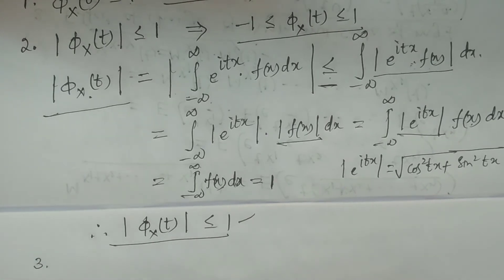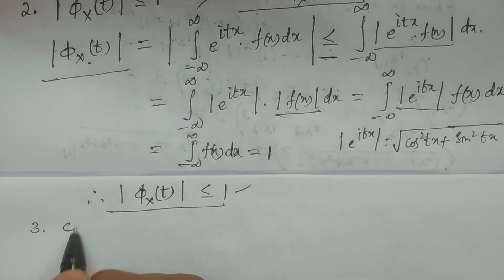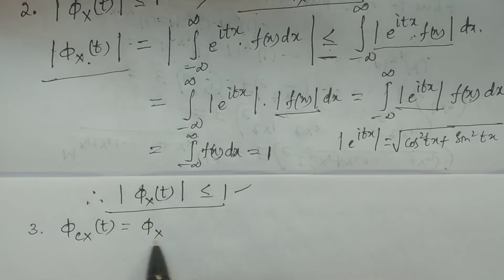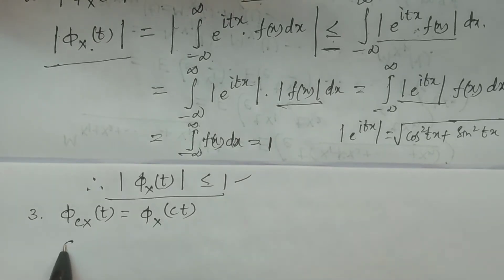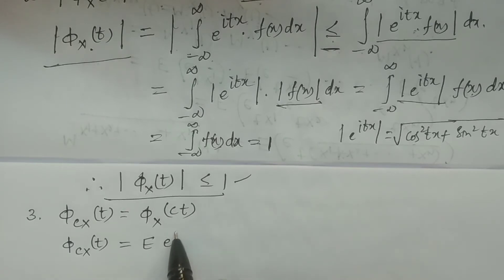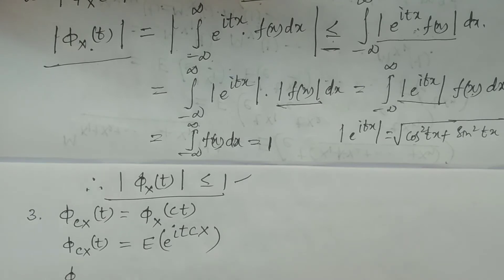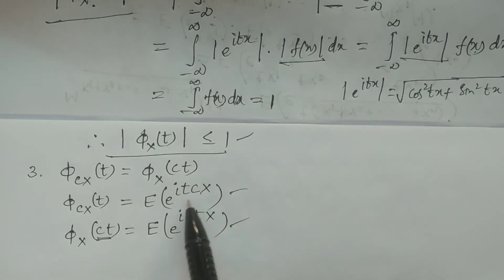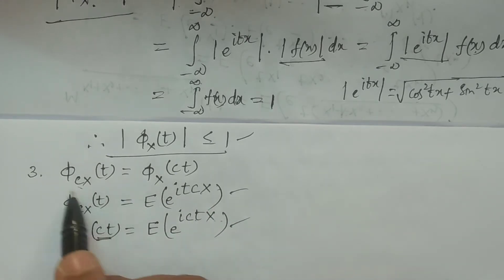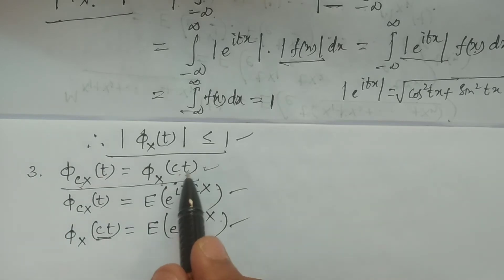Property number 3: phi_{cx}(t) = phi_x(ct). This can be easily proved — we proved a similar property for moment generating functions. For the left-hand side, phi_{cx}(t) = expectation of e^{it(cx)}. For the right-hand side, phi_x(ct) = expectation of e^{i(ct)x}. Both expressions are identical — expectation of e^{itcx} — so the two are equal. Therefore, phi_{cx}(t) = phi_x(ct).